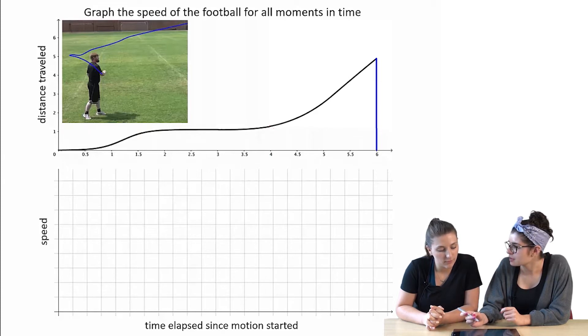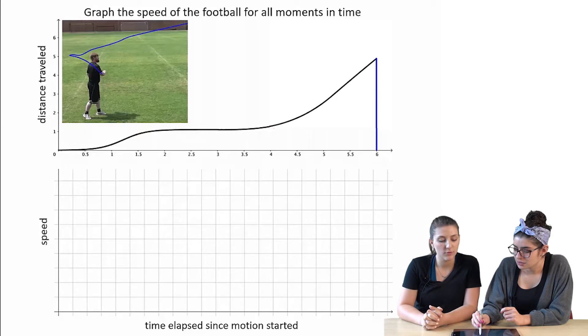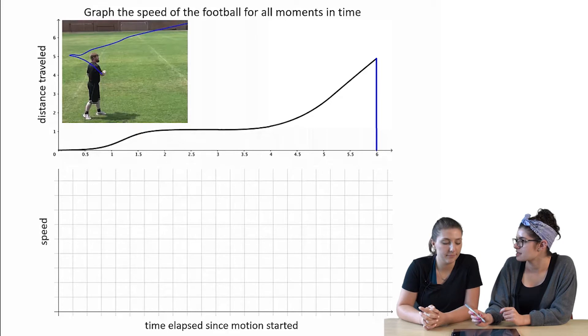I guess that wouldn't technically be the speed because you have to calculate what the distance is over time. So your speed would be different than what's on that line. Does that make sense? Wait.